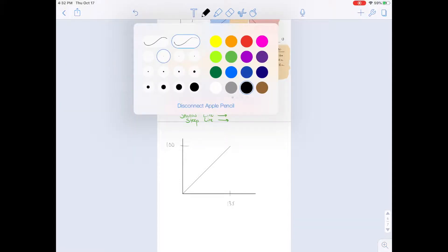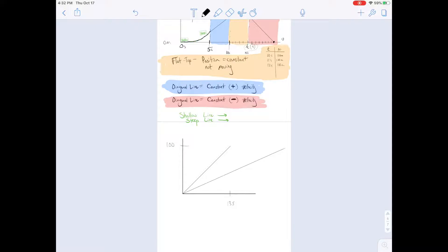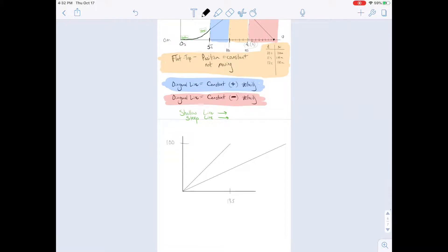But then we also have a very slow student, a student who may be on crutches, a student who may just be off their game that day, a slow student running or walking in 26 seconds. This is a steep line right here, and this is a shallow line right here.